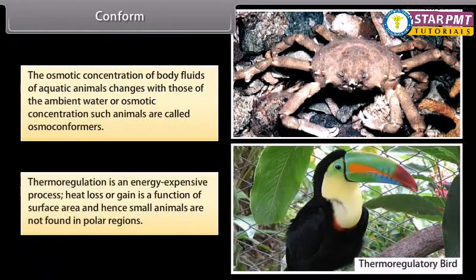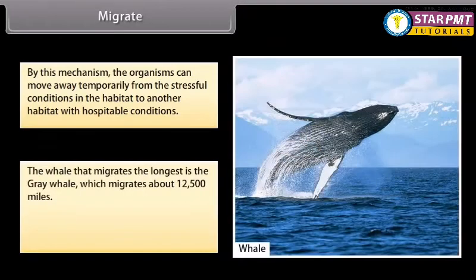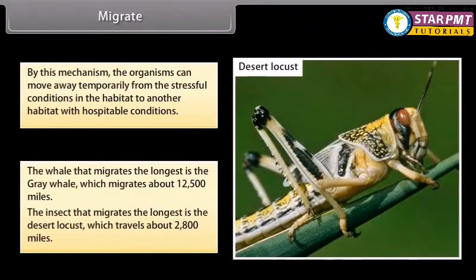Thermoregulation is an energy-expensive process. Heat loss or gain is a function of surface area, and hence small animals are not found in polar regions. By the mechanism of migration, organisms can move away temporarily from stressful conditions in their habitat to another habitat with hospitable conditions. The whale that migrates the longest is the gray whale, which migrates about 12,500 miles. The insect that migrates the longest is the desert locust, which travels about 2,800 miles.